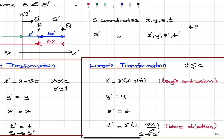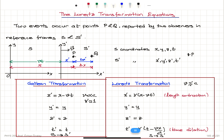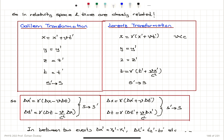If V is much less than C, then the Xv/C² term becomes negligible and gamma becomes 1, and you obtain T prime equals T. When gamma is 1, you obtain X prime equals X minus Vt. So you can easily recover Galilean transformation equations in this limit where V is much less than C. This is the transformation from the S reference frame to S prime. In relativity, we see that space and time are closely related.